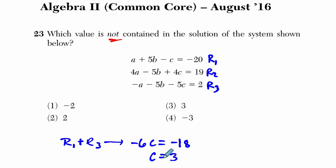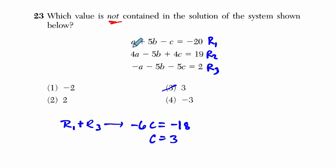Okay, so c equals 3. Cross it off. Now, if I look at other aspects of the system, I don't know, do I see anything else that cancels out? Yes, I do. Look at this.